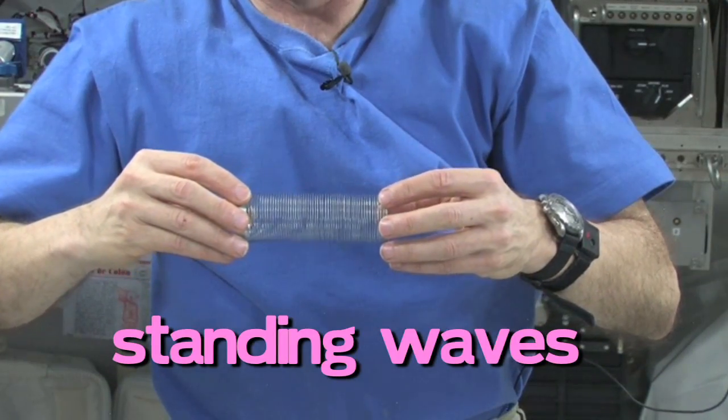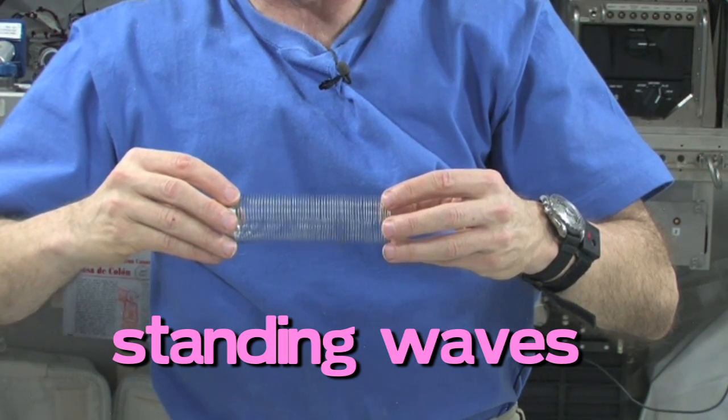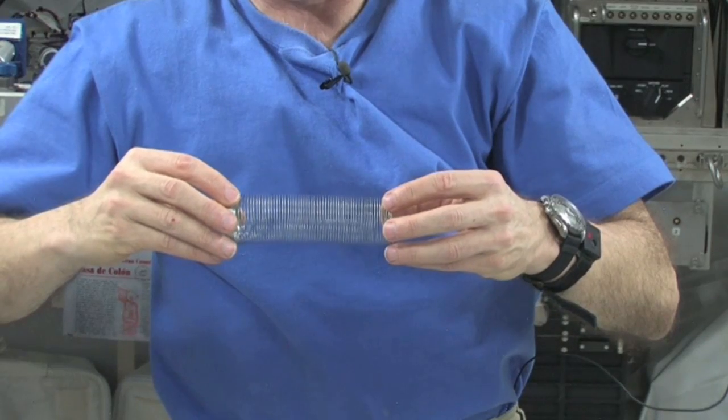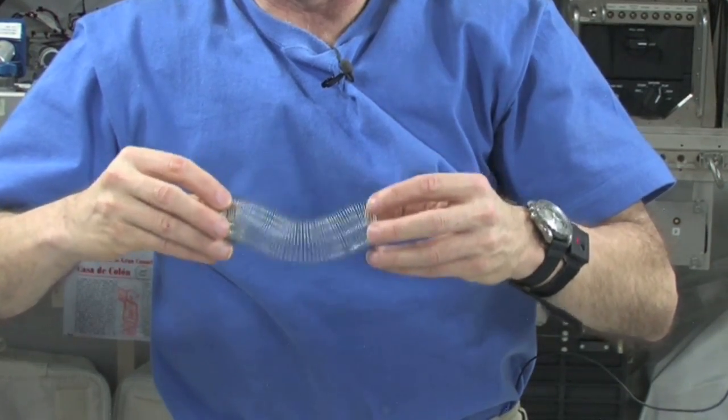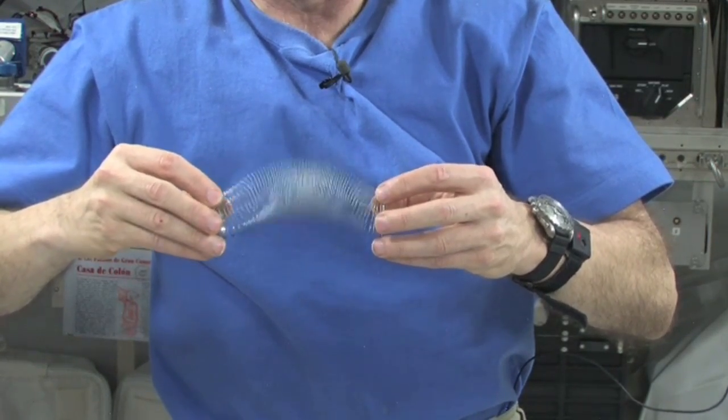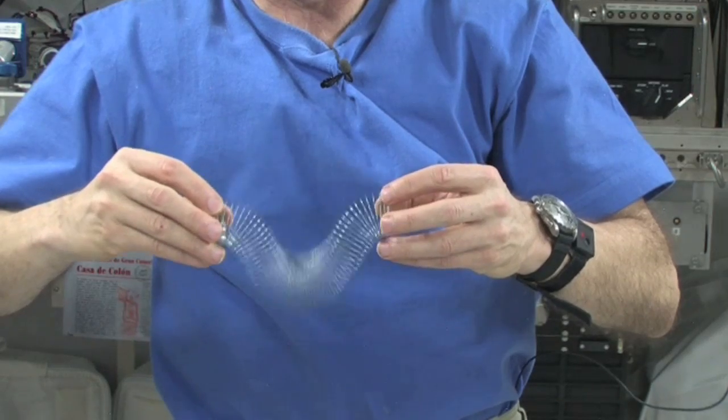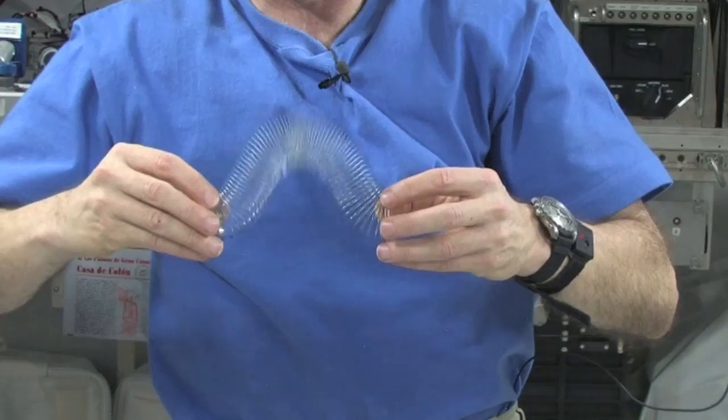Standing waves are waves that don't appear to move at all. And in fact, the nodal point stays fixed. Let's try and see if we can get a one-node standing wave going here. There we go. That one's pretty easy. So the nodal points are at the fixed ends of the slinky.